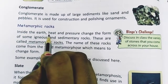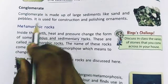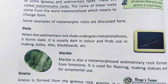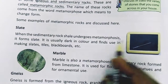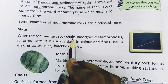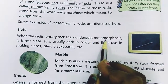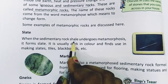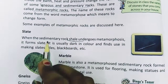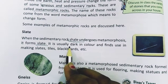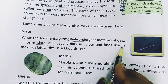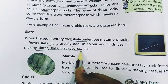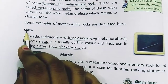When sedimentary and igneous rocks undergo this process, they become metamorphic rocks. For example, slate: when the sedimentary rock shale undergoes metamorphosis, it forms slate. Slate is usually dark in color and is used in making tiles and blackboards.